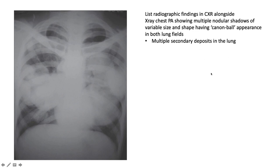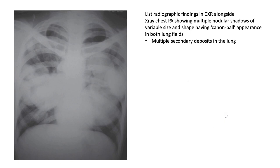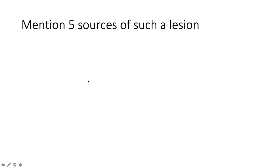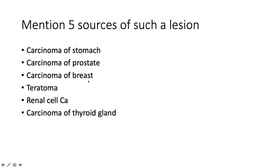This busy X-ray shows a PA film with multiple nodular shadows of variable size and shape having a cannonball appearance — these are multiple secondary deposits in the lung. Five common sources of pulmonary metastases include carcinoma of the stomach, prostate, breast, teratoma, renal cell carcinoma, and carcinoma of the thyroid gland.